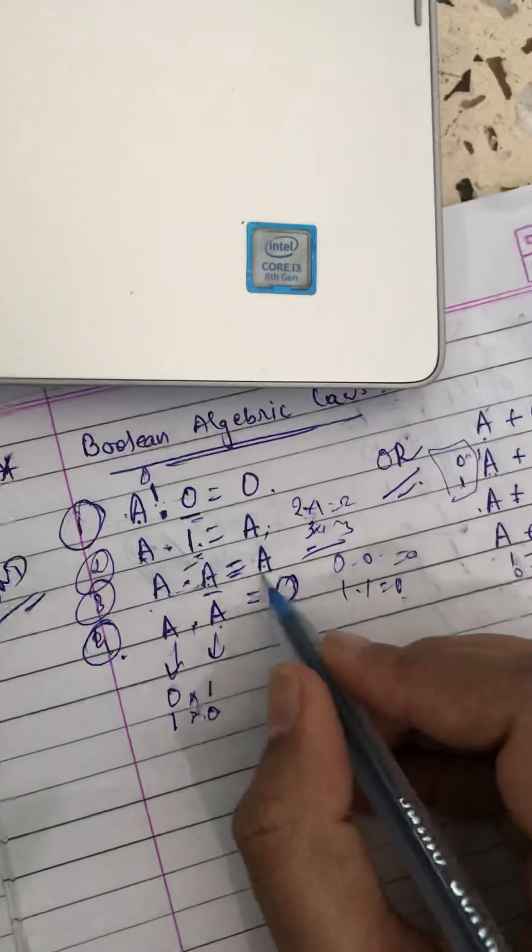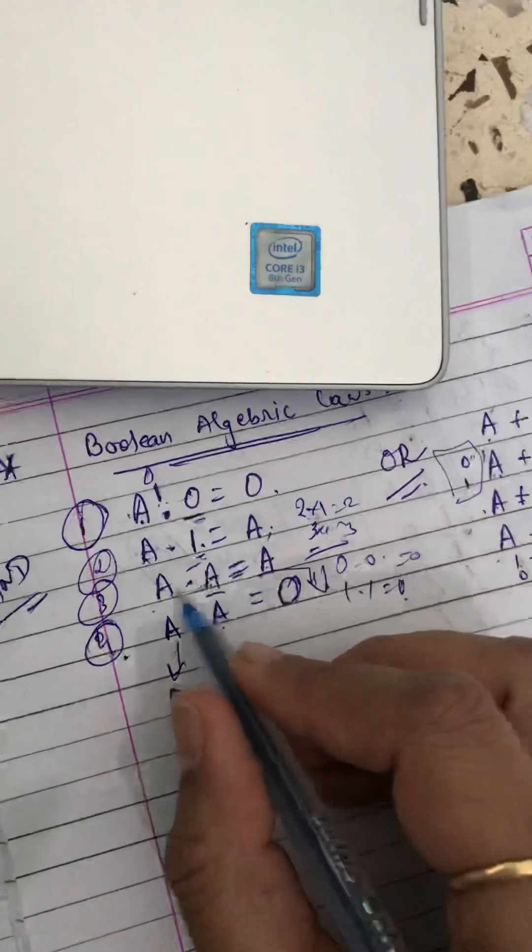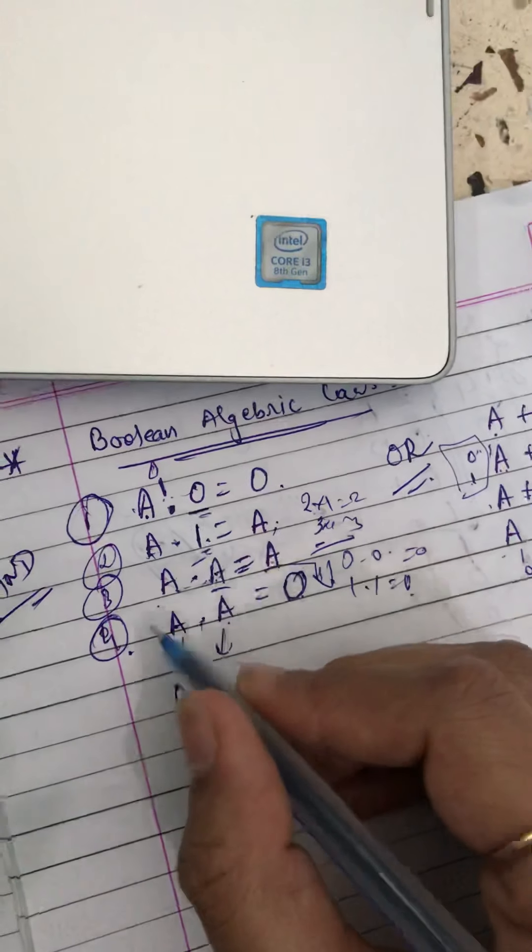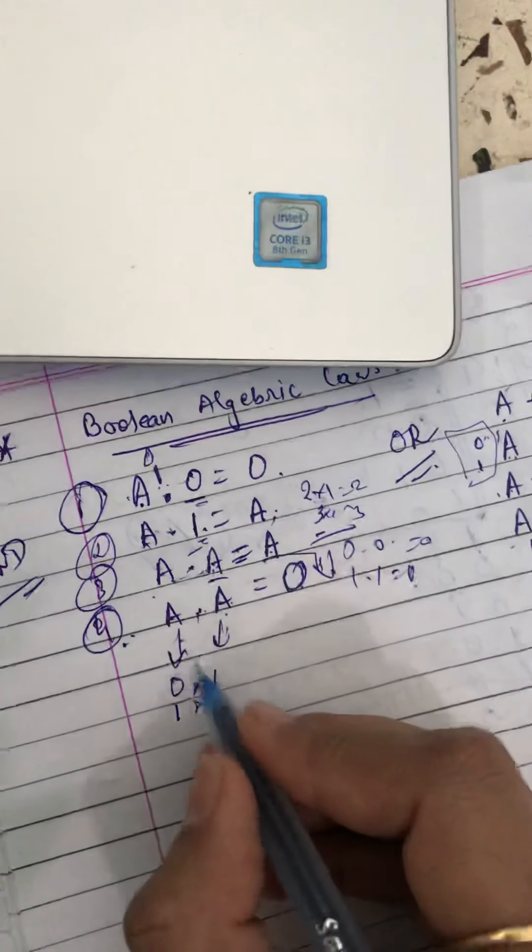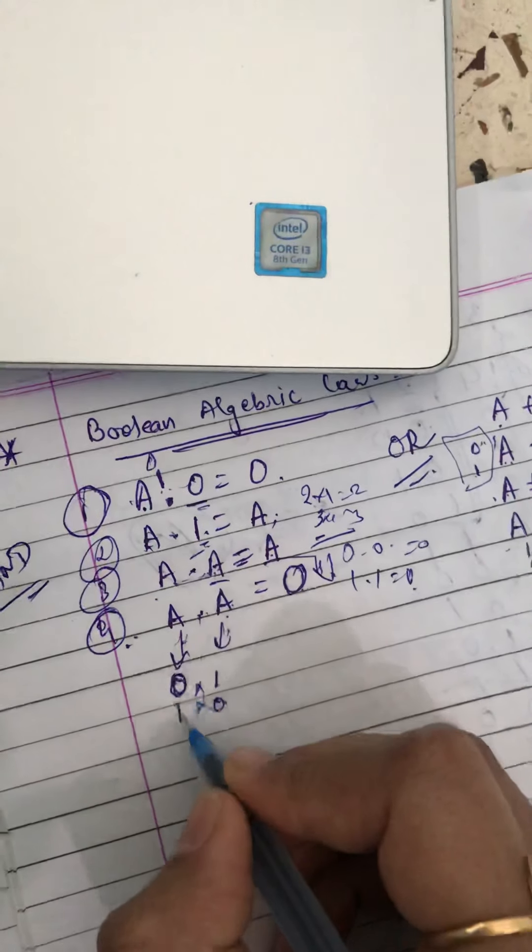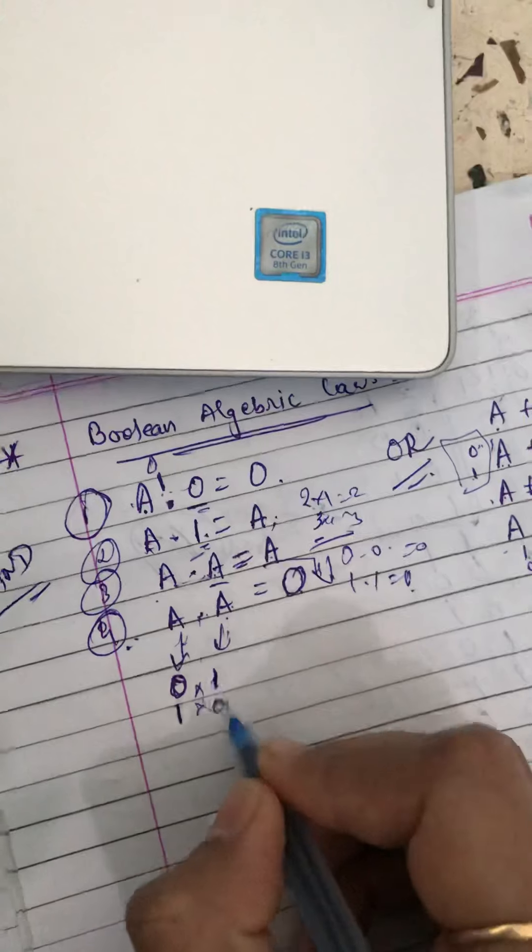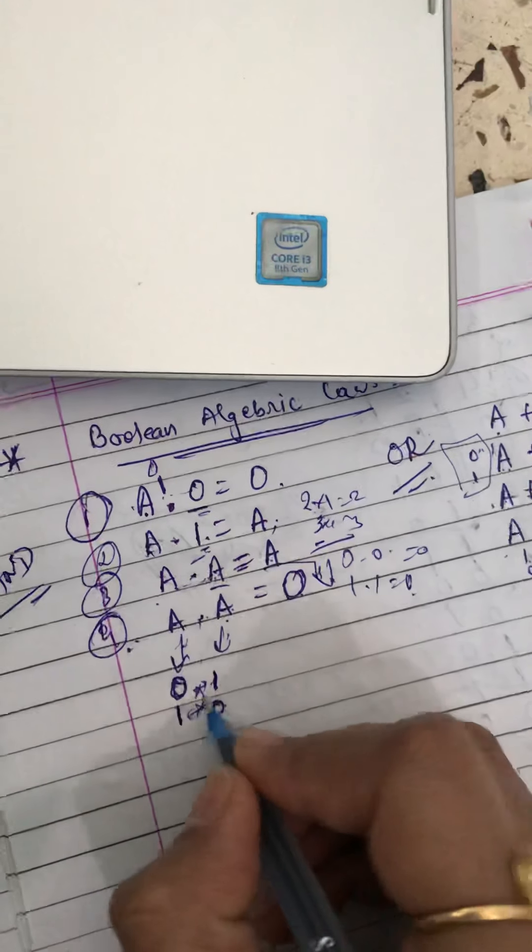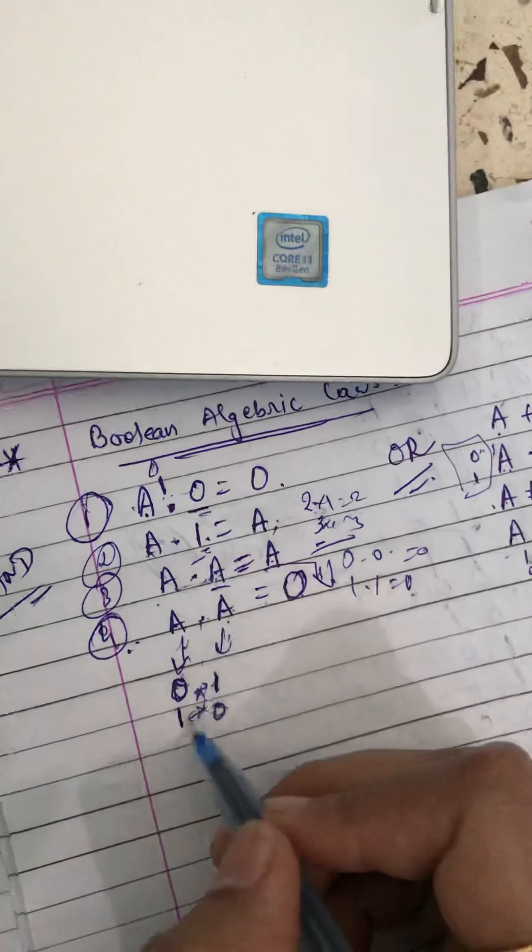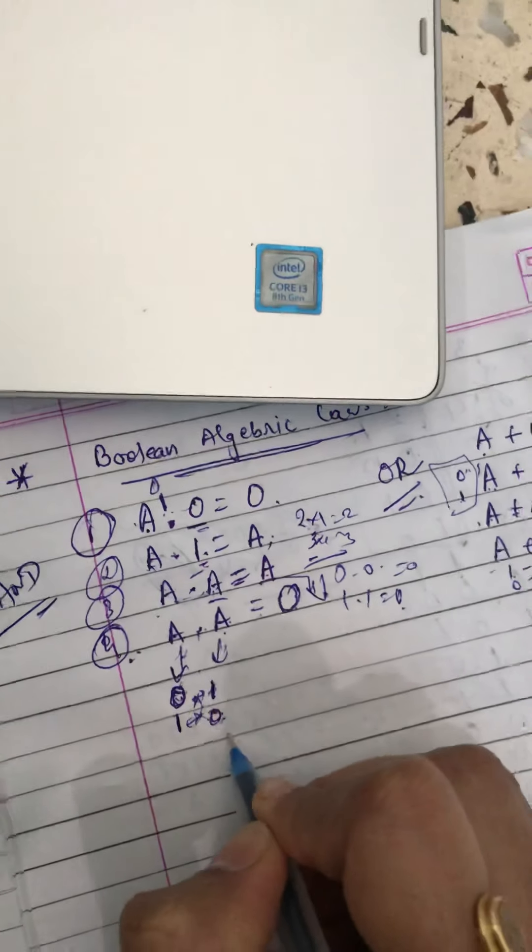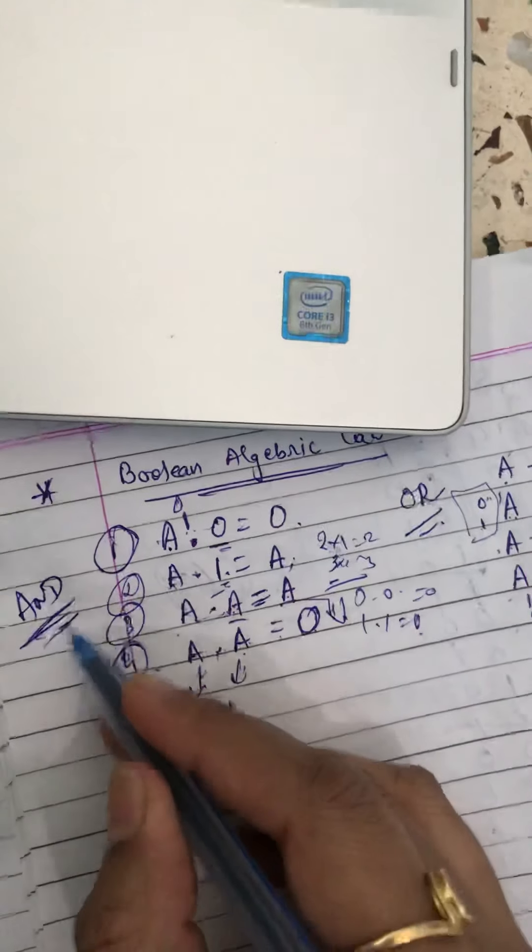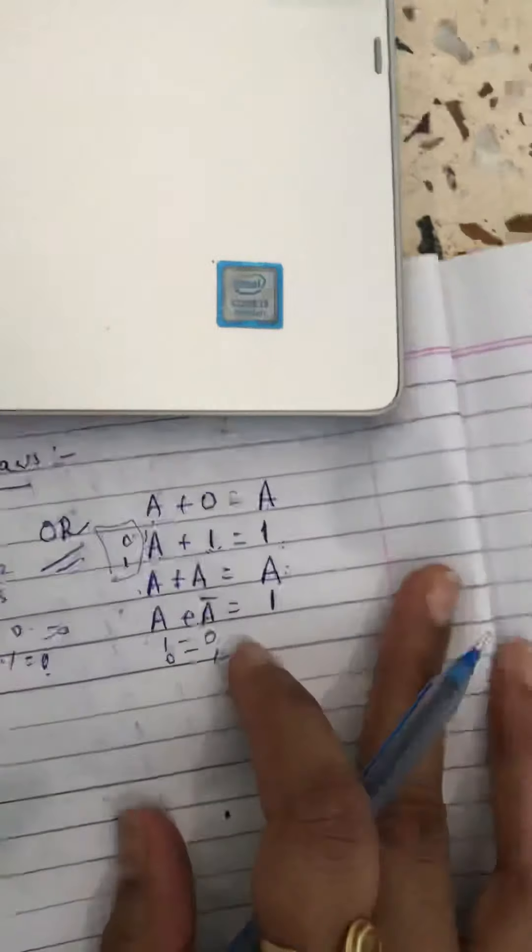Fourth is A dot A bar. This is inverse. If A is zero or one, A bar is one or zero, vice versa. You will get zero because there is multiplication with zero. These are AND laws for Boolean algebra.